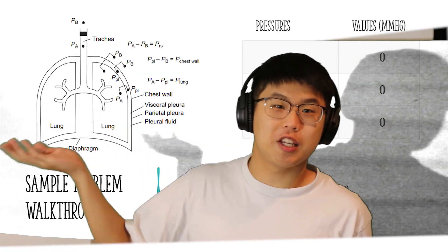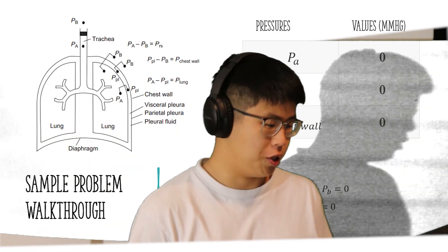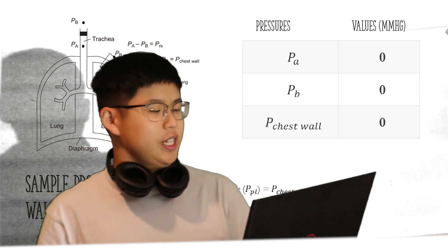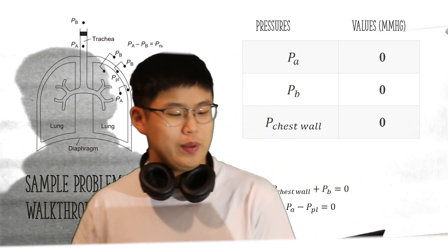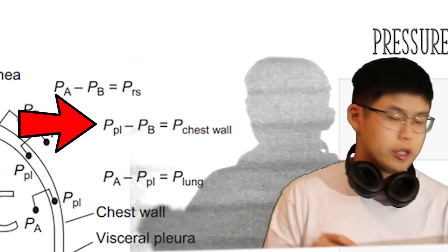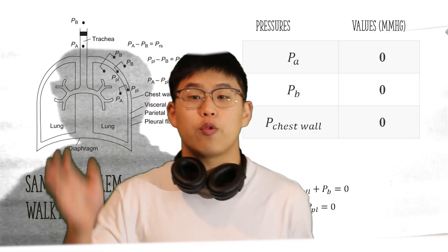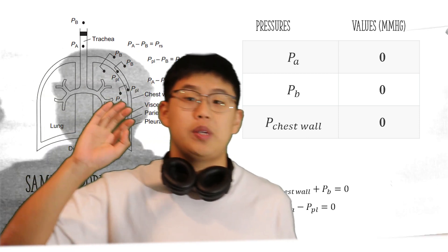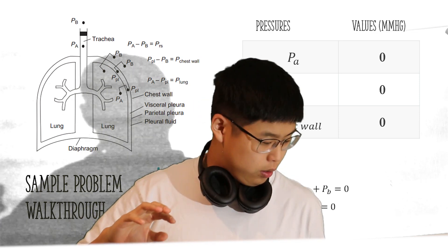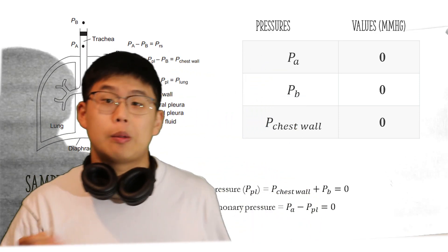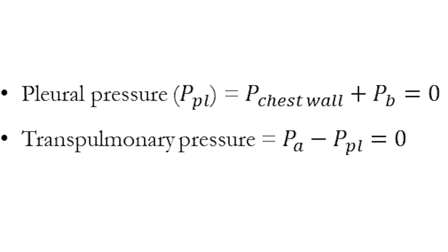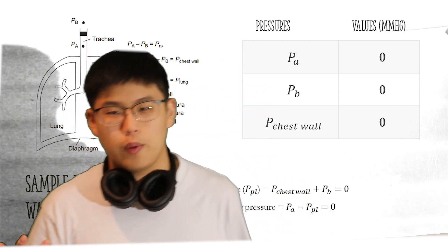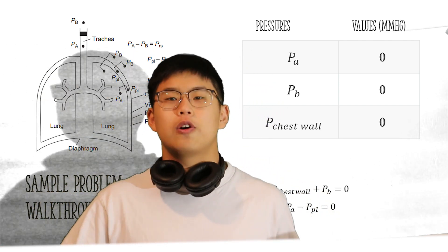Here are all the equations describing relationships between different lung pressures. To find transpulmonary pressure we need alveolar and pleural pressure. The difference between pleural pressure and ambient barometric pressure (PB) equals the chest wall pressure, so we can rearrange and solve for pleural pressure, which we find to be zero. Since PA (alveolar pressure) is also zero, when we calculate the difference between the two, transpulmonary pressure equals zero mmHg. This explains why the patient can't breathe well — their lungs don't have a positive pressure force to help them expand.